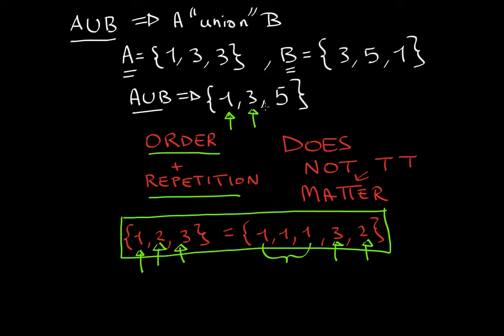A union B is a set containing all elements of A and also all elements of B. One thing I forgot to mention last time is that order and repetition do not matter. Now, I know this symbol looks like a pie, but it's a double T — just so that you're not confused.